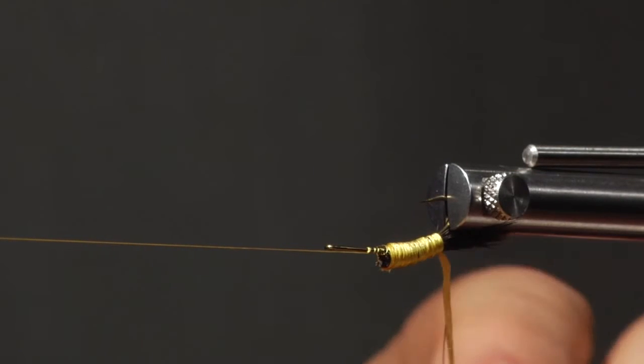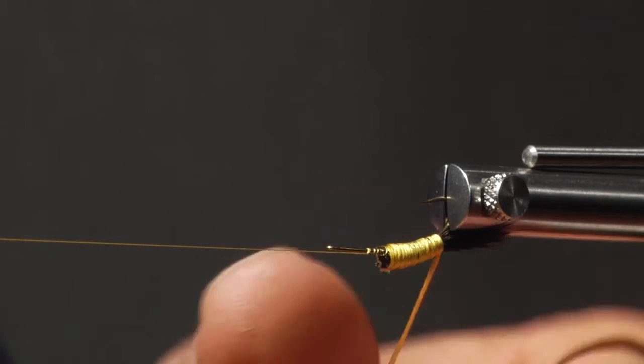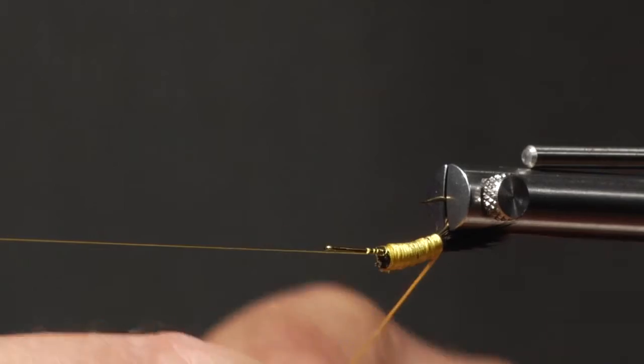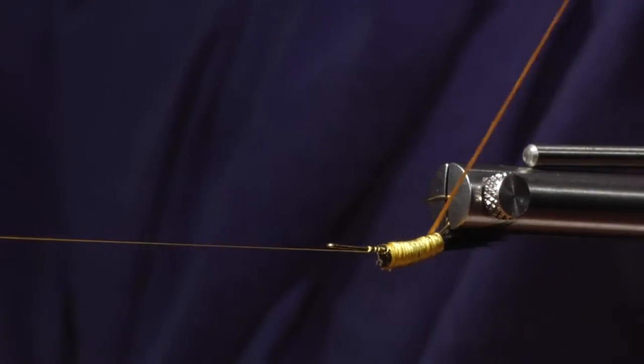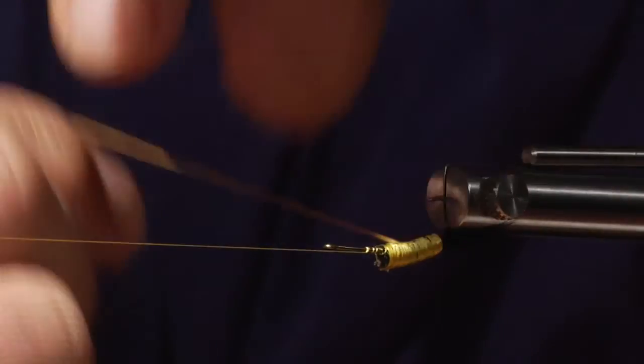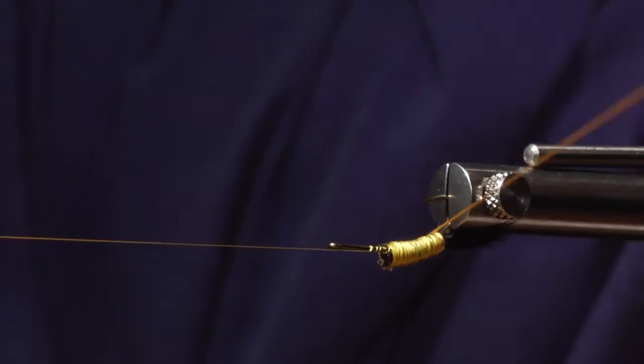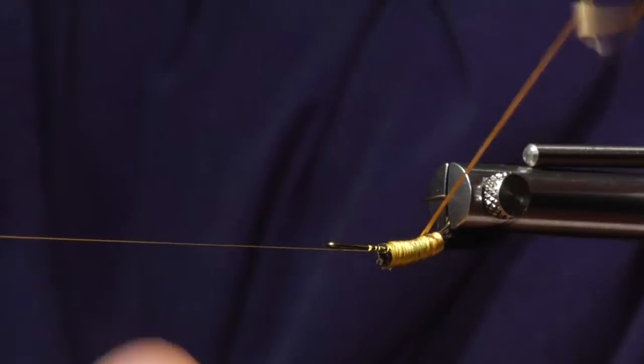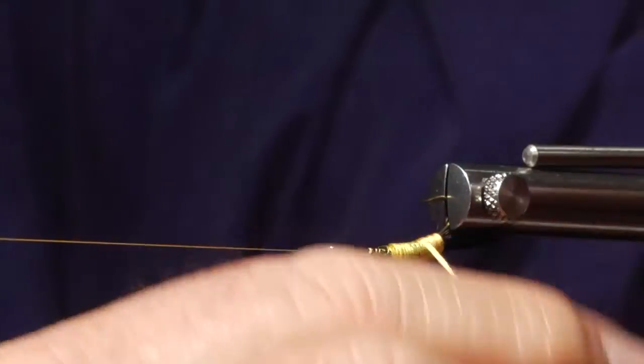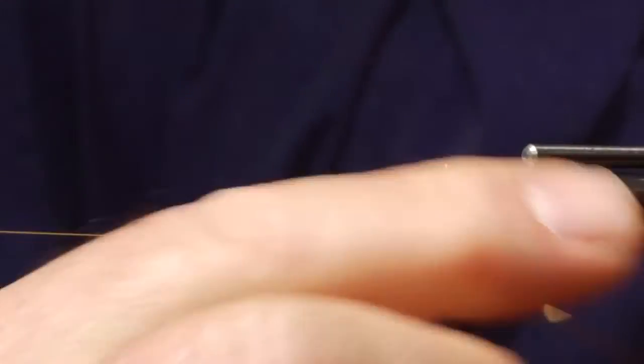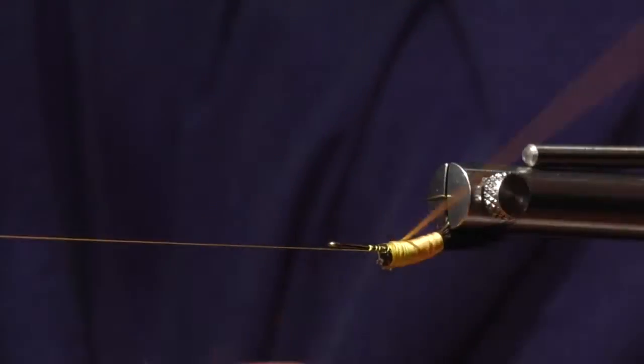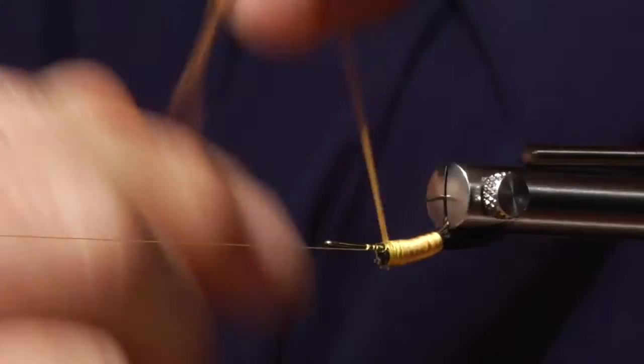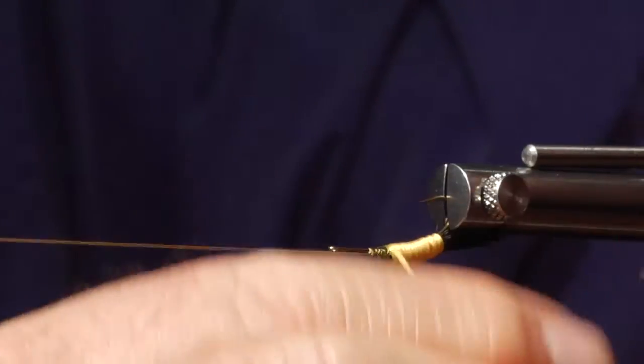Okay, now with the silk floss, I'm going to just wrap it around the body. Like so. And then I'll wrap the rib around it.